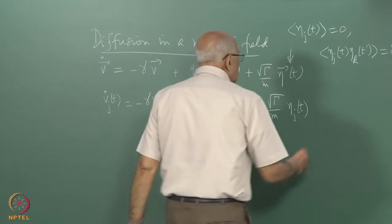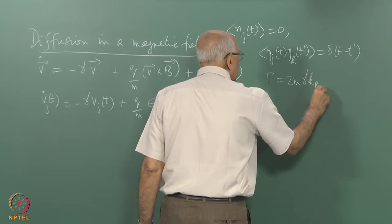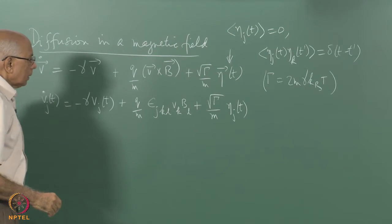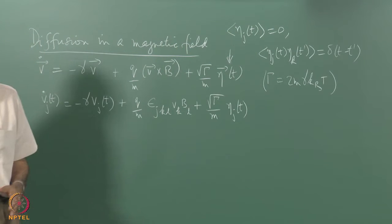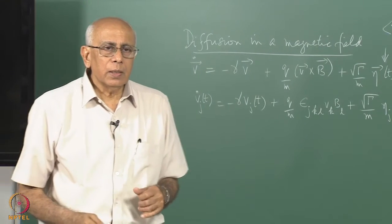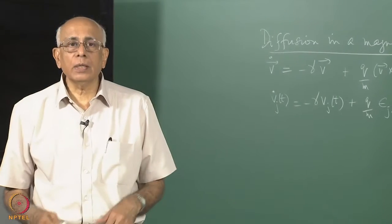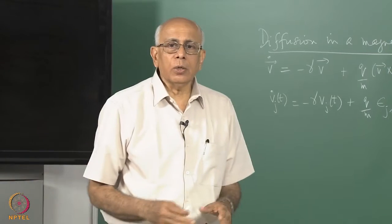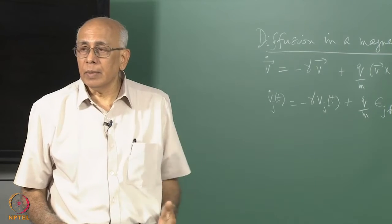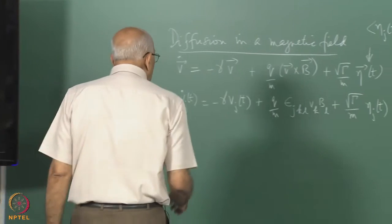As always, we say that gamma² equals 2m gamma k_B T — that is the fluctuation-dissipation relation, which does not change. The first thing to ask is what we expect: when you have this magnetic field on, the Maxwellian distribution of velocities in thermal equilibrium is not disturbed, because the magnetic field does not do any work on the particles. It merely changes the direction of the velocity but does not change kinetic energy.